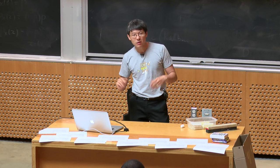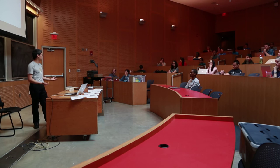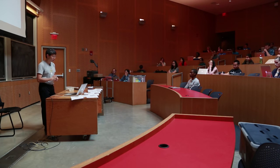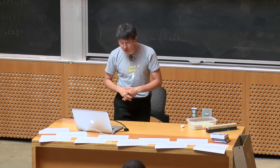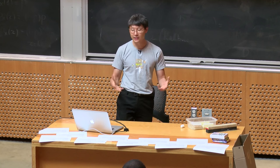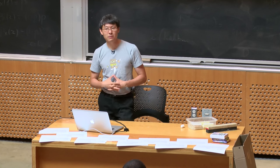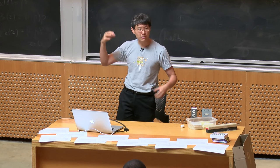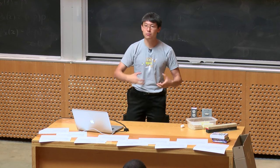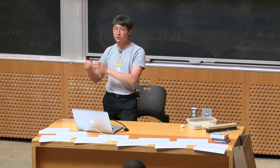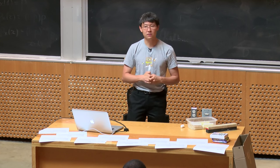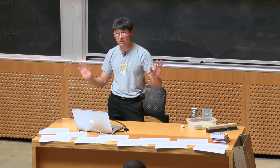It's important to know what kinds of problems are good for brainstorming and what kinds are terrible for it. You need a problem that is very clearly defined and simple. If you've got a really complex problem with lots of opposing factors, either divide it into subdivisions each with a separate answer, or use a different problem-solving strategy entirely. You should be able to articulate the problem simply and clearly. For example, 'get married' — brainstorming is a terrible technique for that. It's too complex and large.